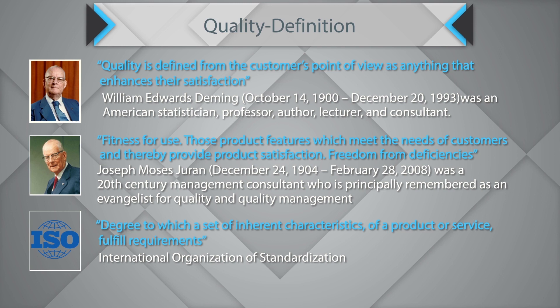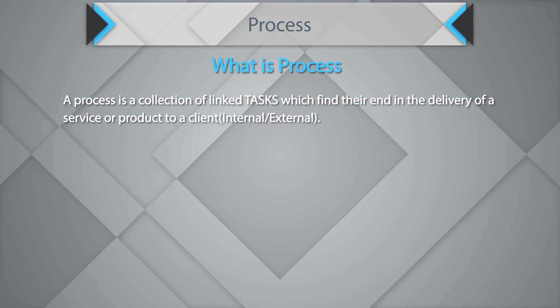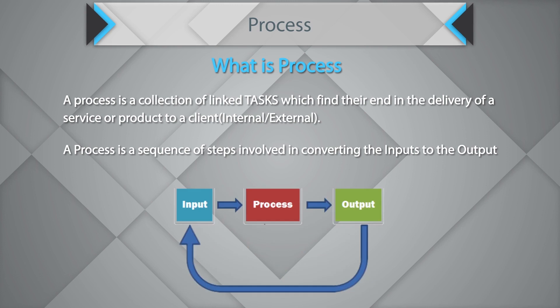Now let's understand what a process is. A process is a collection of linked tasks which find their end in the delivery of a service or product to a customer, either internal or external. A process is a sequence of steps involved in converting input to output. Any business is nothing but hundreds of processes talking to each other — output from one process becomes input to the next. If one process is not working well, it creates unacceptable output, which then becomes faulty input to the next process.